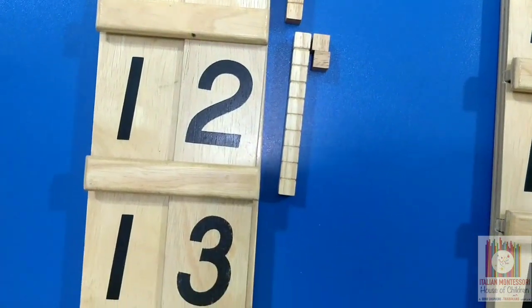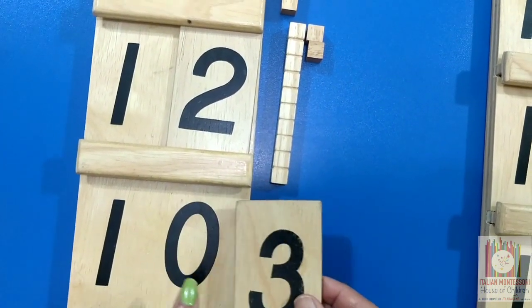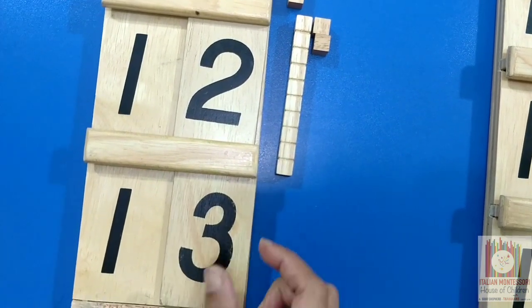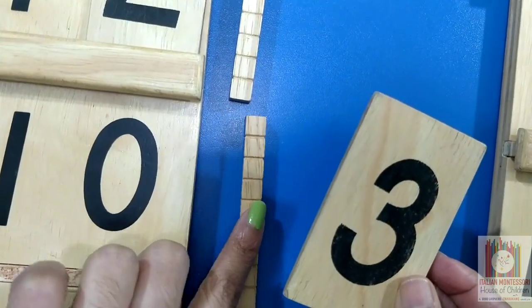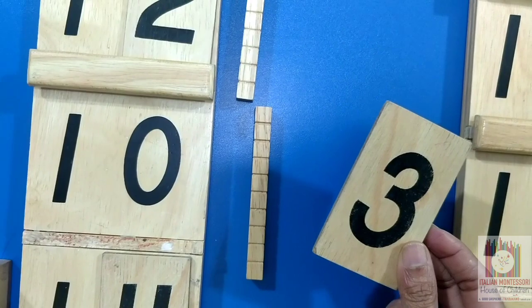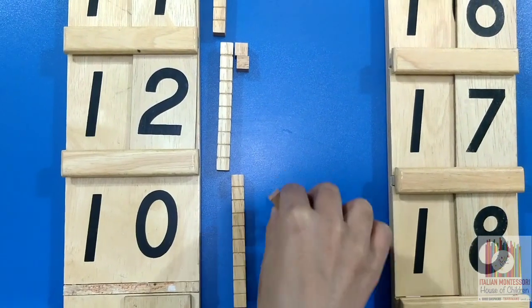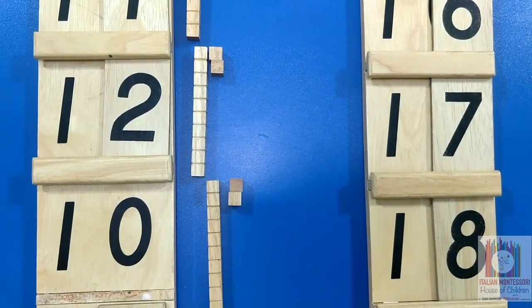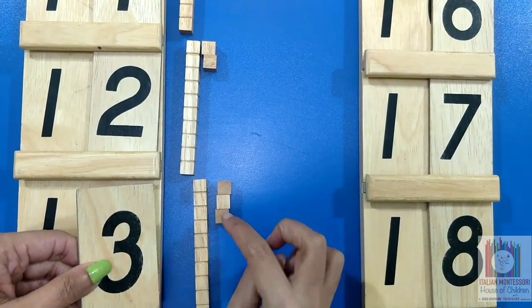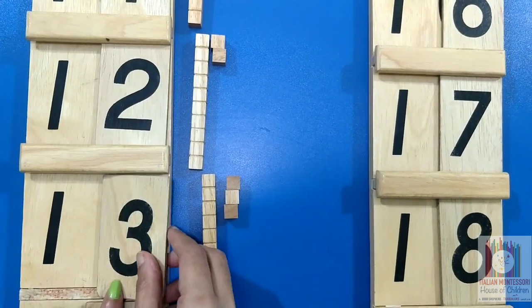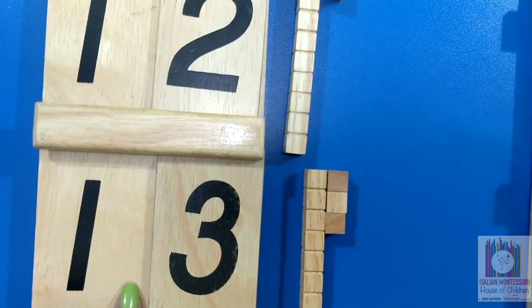10 and 2 units makes 12. Now let's see which number is this. This is 13. 10 and 3 units makes 13. This is the bar of 10. This is the quantity 10 and this is the number 10. 10 and 3 units. These are the units 3. 10 and 3 units makes 13. This is quantity 13 and this is the symbol for number 13.